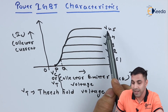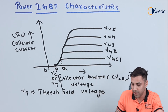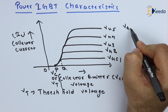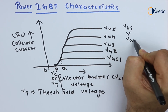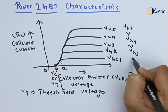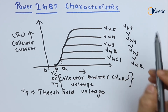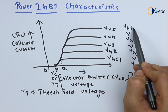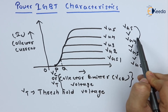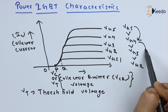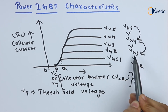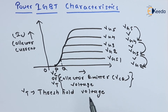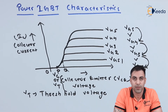The same applies for VG5. We can write the ordering as: gate-emitter voltage at VG5 is greater than VG4, which is greater than VG3, which is greater than VG2.